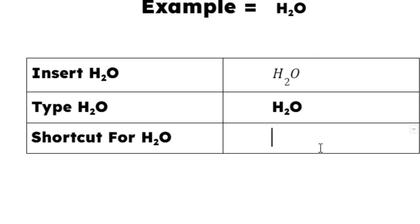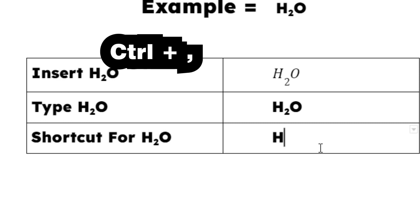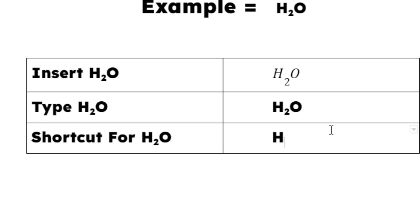The third method uses a shortcut. Type H, then to put 2 in subscript, press the Control key and the comma key on your keyboard. Your pointer moves slightly down — now type 2. To return to normal position, press Control and comma again, then type O. Now it is H₂O.